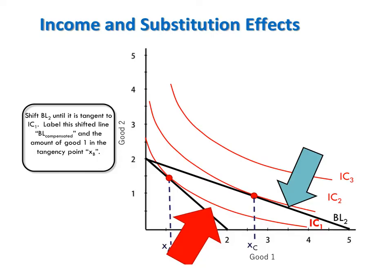There are two things you need to know about the compensated budget line in order to graph it. First, the compensated budget line has to be parallel to budget line 2, because it has to reflect the price of x relative to the price of y after the price of x changes. And two, the compensated budget line has to be tangent to indifference curve 1.